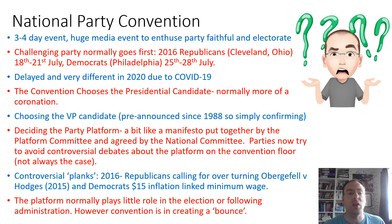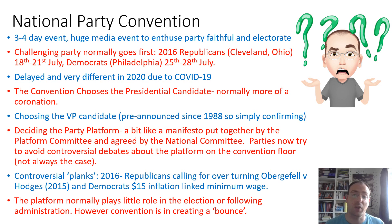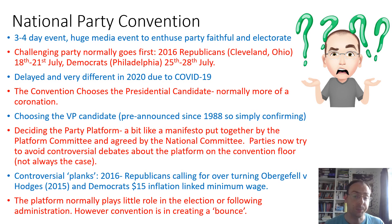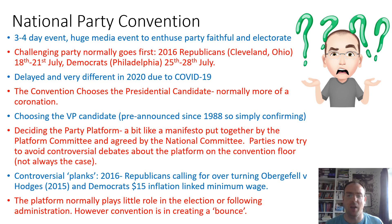The National Party Convention is normally a three or four day event — it's a huge media event aimed to enthuse the party faithful and the electorate about your candidates. The challenging party normally goes first; for example in 2016, the Republicans went on the 18th to 21st of July and the Democrats followed on the 25th to the 28th. It's been very different in 2020 because it's all been delayed due to COVID-19 and the events are going to be largely virtual rather than physical.